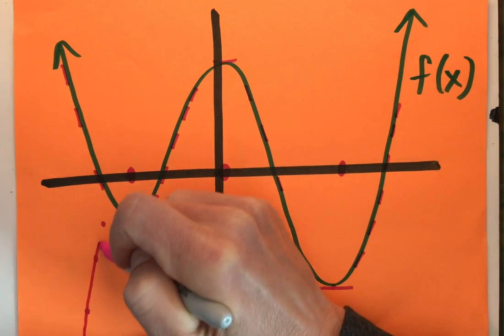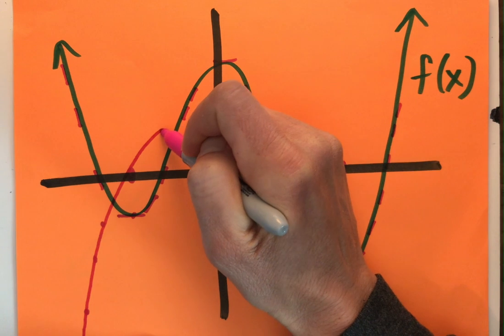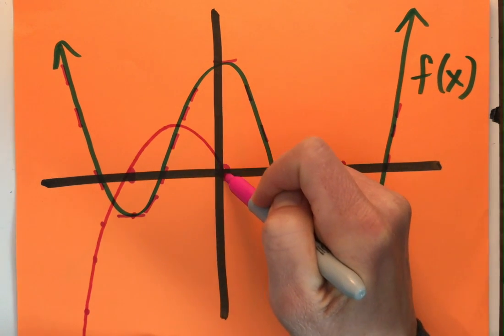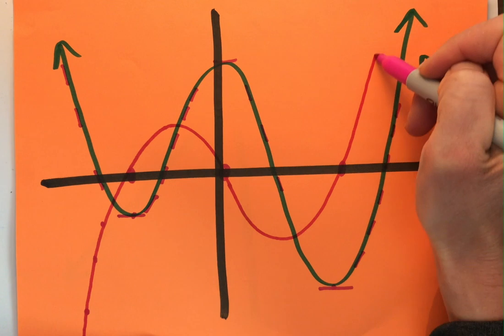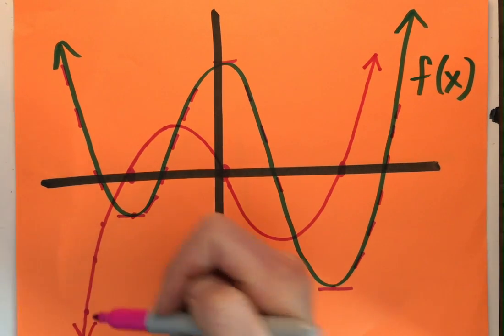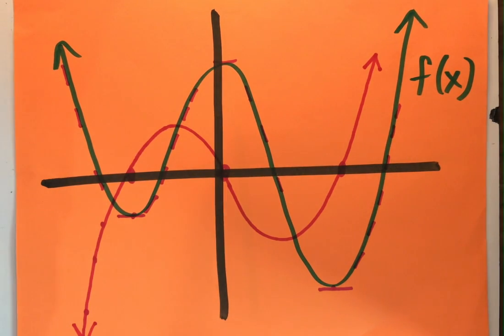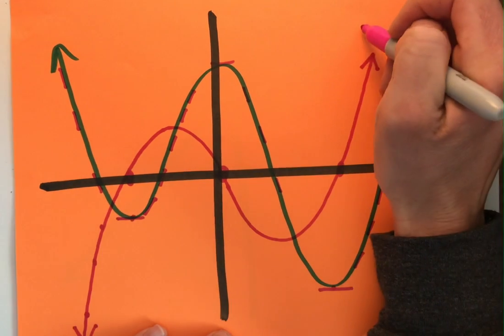Negative slopes, negative tangents, negative slopes, positive, negative, negative, negative, positive. Boom. All right so there's my f prime of x.